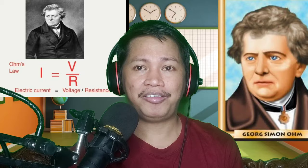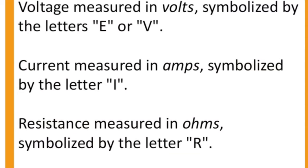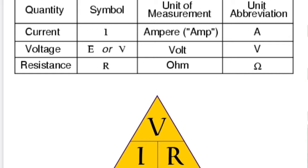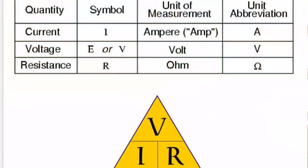In your module, there are three quantities: voltage, resistance, and current. Voltage is measured in volts and symbolized by the letter V or E. Current is measured in amps and symbolized by the letter I. In your module, there is a table divided into four columns: quantity, symbol, unit of measurement, and unit of abbreviation. Current is represented by capital letter I, and voltage can be E or V — where E stands for electromotive force or EMF.